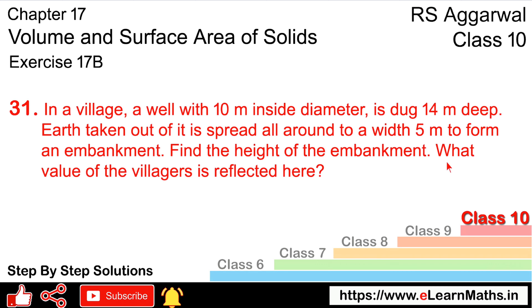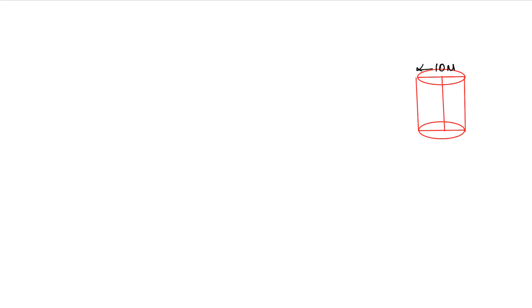What value of the villager is reflected here? In a village there is a well which is 10 meter diameter and is 14 meters deep. This is a well with a diameter of 10 meters and height of 14 meters.